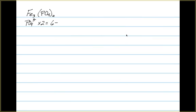Let's look at another example. We've got iron and phosphate. In this case, we don't know what the iron's oxidation state is, but we can figure it out.